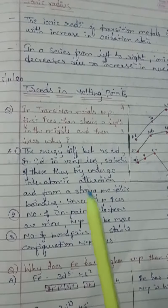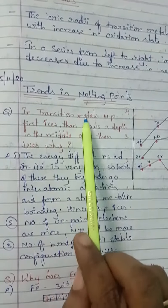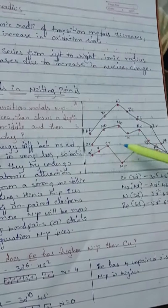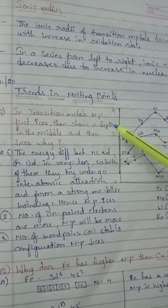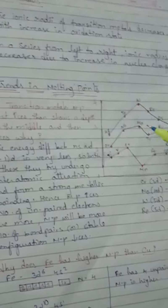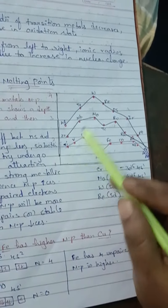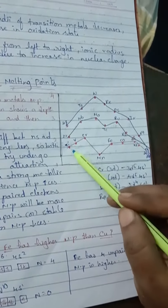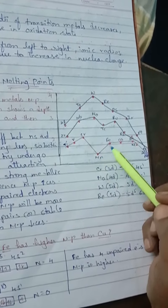The first question: in transition metals, the melting point first increases, then shows a dip in the middle, then decreases, and at the last it is also going to be decreased. Look here — the melting point first increases, then decreases.